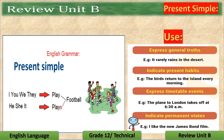We use the present simple in the following cases. Number one, to express general truths — like: It rarely rains in the desert. Number two, to indicate present habits — like: The birds return to the island every morning. Number three, to express timetable events — like: The plane to London takes off at 6:30 a.m. And number four, to indicate permanent states — like: I like the new James Bond film.